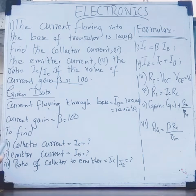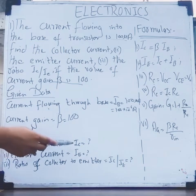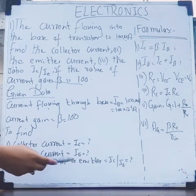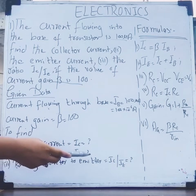The unknown quantities are collector current Ic, emitter current Ie, and the ratio Ic/Ie. These are the unknown values and variables, and we have the given data.